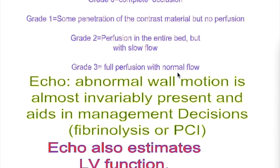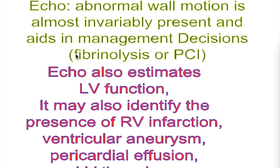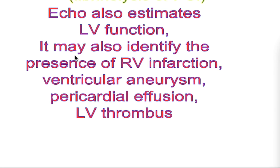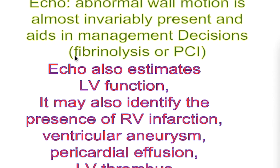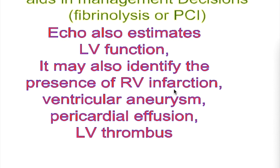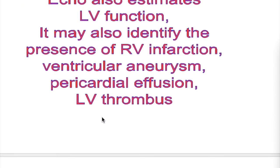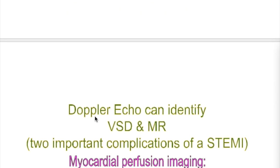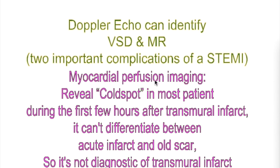What types of echocardiography are done in myocardial infarction? Two types: standard echocardiography and Doppler echocardiography. Standard echocardiography shows abnormal wall motion in almost all patients and aids in management decisions like fibrinolysis or PCI. It also estimates LV function and may identify right ventricular infarction, ventricular aneurysm, pericardial effusion, and left ventricular thrombus. Doppler echocardiography can identify ventricular septal defect and mitral regurgitation — two important complications of STEMI.